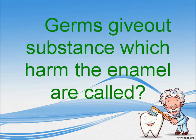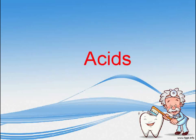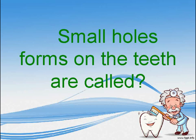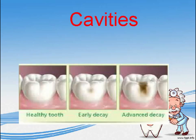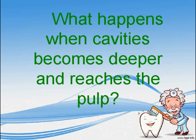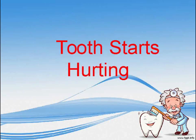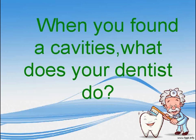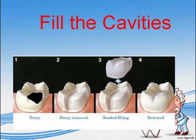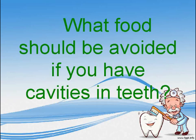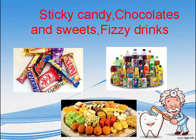The substance that germs give out which harms the enamel is called? Acids. Small holes that form on the teeth are called? Cavities. What happens when cavities become deeper and reach the pulp? The tooth starts hurting. When you find a cavity, what does your dentist do? Fill the cavity. What food should be avoided if you have cavities? Sticky candy, chocolates and sweets, fizzy drinks.